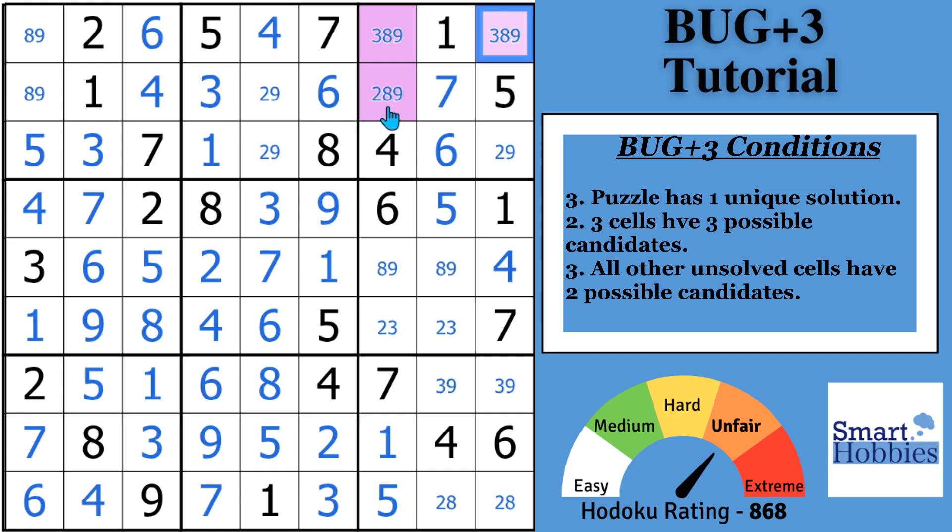For the BUG+3, you have certain conditions that need to be met. One, the puzzle has to have a unique solution. Two, three cells have to have more than two candidates, or in this case, three candidates. We have that. And then the third situation is that all the other cells have to contain two candidates or bivalue cells. We have that situation.